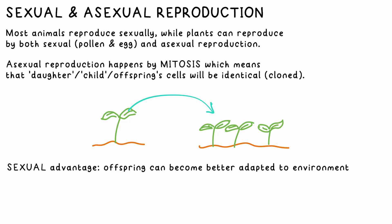An advantage of sexual reproduction is that variation occurs, which can result in organisms becoming better suited to their environment, so they're more likely to survive.